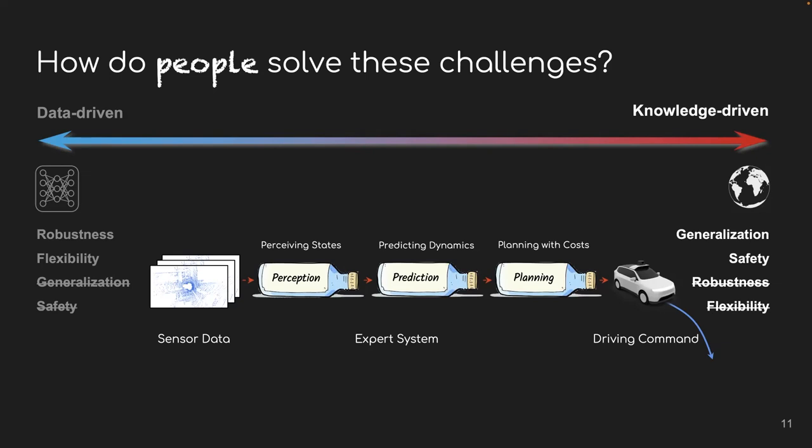So such a pipeline factorizes a complex driving problem into sub-problems that are easier to solve and generalize in a combinatorial manner. It also allows you to encode many human prior knowledge through hard-coded rules. And thus, it can guarantee our vehicle to drive in a traffic-rule-compliant manner. However, this approach also brings many challenges and problems.